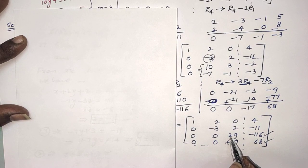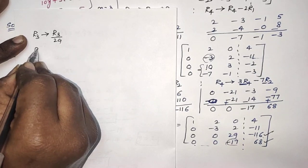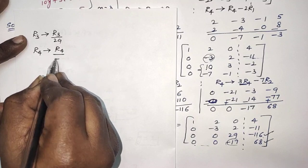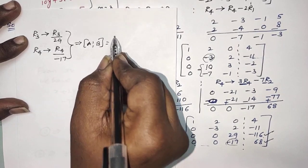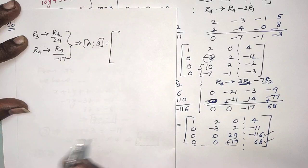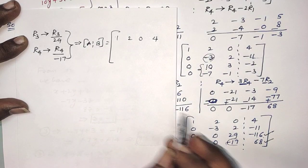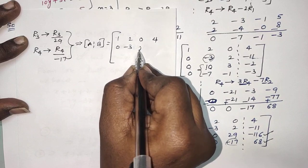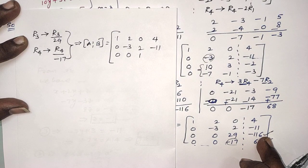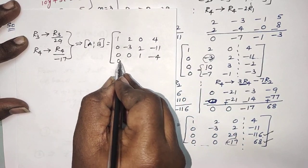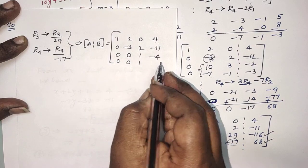To make that element zero, first divide R3 by 29 and R4 by minus 17, since 116 is a multiple of 29. So R3 → R3/29 and R4 → R4/(−17). With these operations, the augmented matrix becomes: first two rows same (1, 2, 0, 4 and 0, minus 3, 2, minus 11), third row becomes 0, 0, 1, minus 4, and fourth row becomes 0, 0, 1, negative 4.